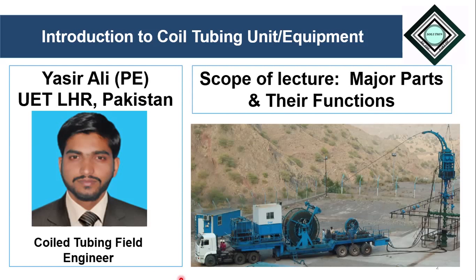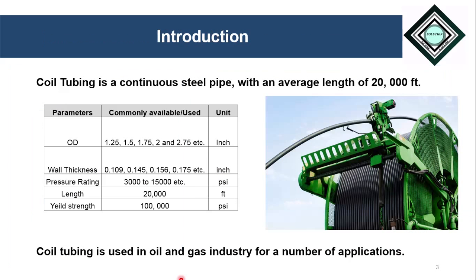Let's proceed with the question: what is coil tubing? Coil tubing is actually a continuous steel pipe wound on a round-shaped drum as a single piece. As shown in this diagram, a continuous steel pipe is wound on this drum as a single piece. The length of a typical coil tubing string is about 20,000 feet.